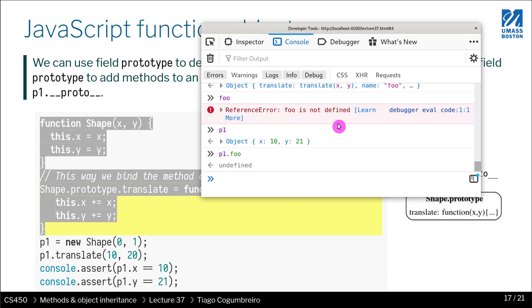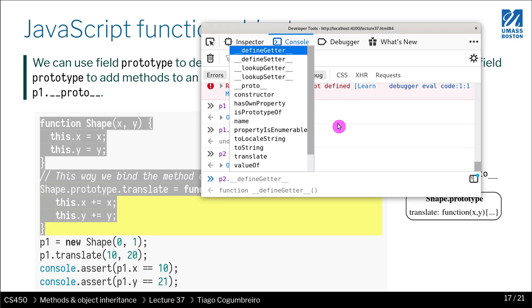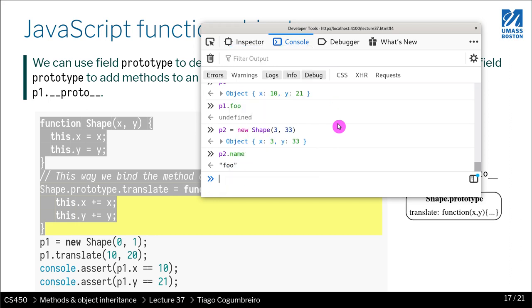So now if I create, I created the object. P2 equals new shape. S3, 33, name. Now P2 name exists.